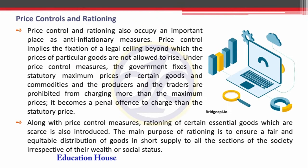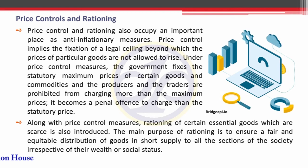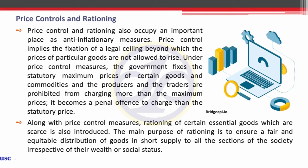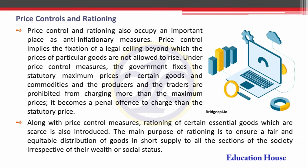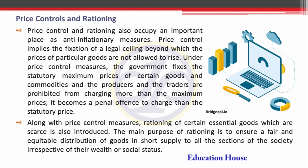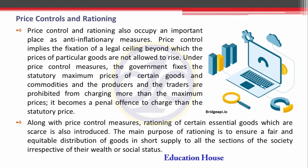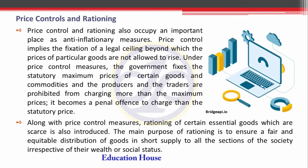Price Controls and Rationing also occupy an important place as anti-inflationary measures. If the government applies some price control and regulation by their own ways — through indirect and direct measures — automatically prices are controlled. Sometimes the government controls pricing by controlling excise duty, by the taxation system, and by subsidiaries. Those are the different ways the government can control prices, and if prices are controlled, then automatically inflation can be controlled from the market.